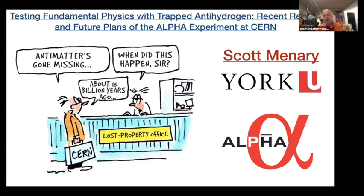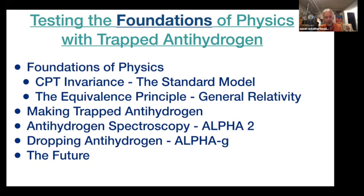What I want to talk about is what we're doing on Alpha, using antihydrogen to test fundamental physics. It's more testing fundamental physics than I realized when I started to make this talk. We're going to test foundations of physics with Alpha, with antihydrogen. The two things I want to talk about are CPT invariance, which is the underpinning of the standard model, and the equivalence principle, which is the underpinning of general relativity.